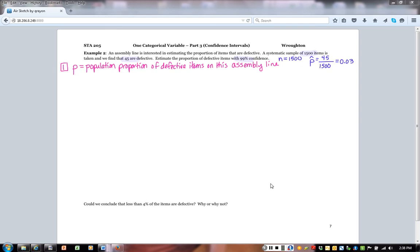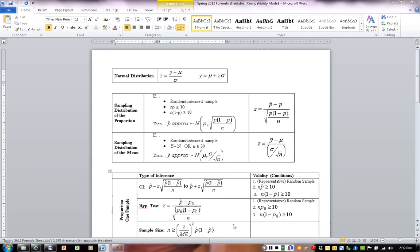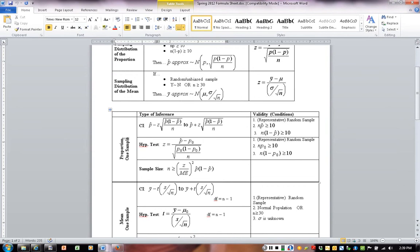Step two is our conditions. If you remember, conditions will be on your formula sheet. So I've pulled up the formula sheet here. We're working still on the proportion of one sample. Here's the confidence interval that we're going to be doing, and right next to it are those conditions. Here are the conditions that we're going to be checking.